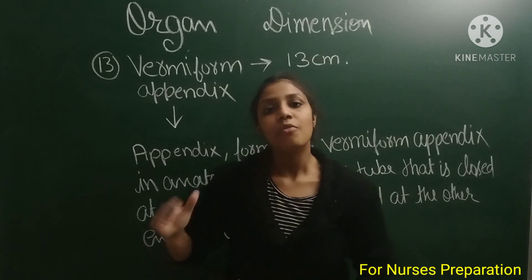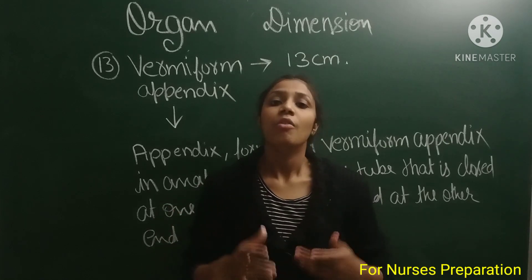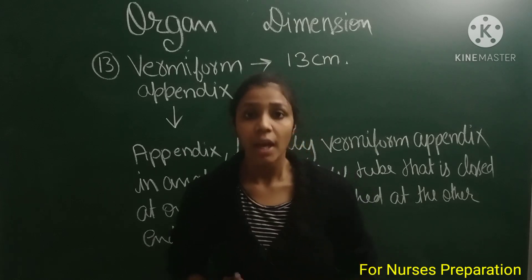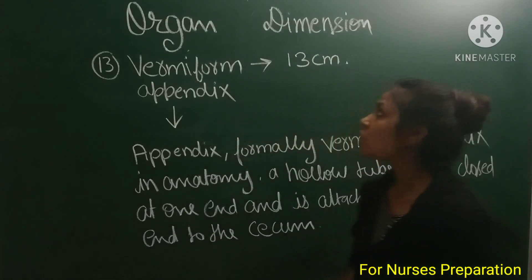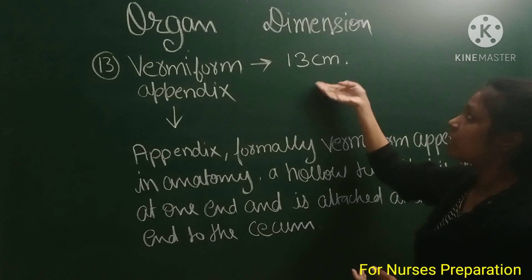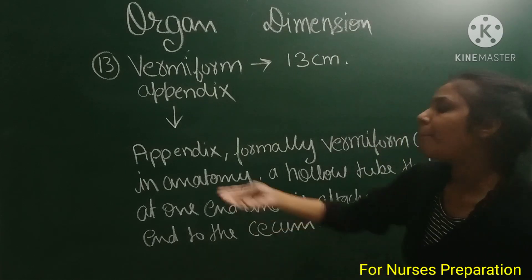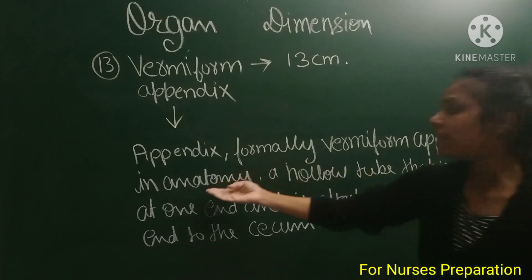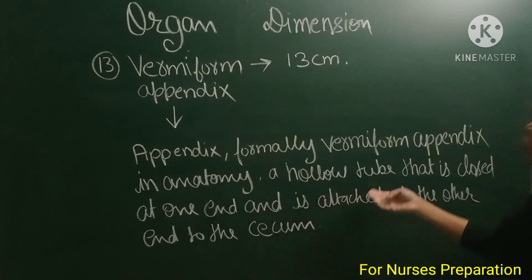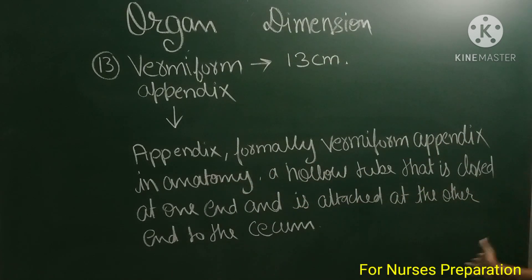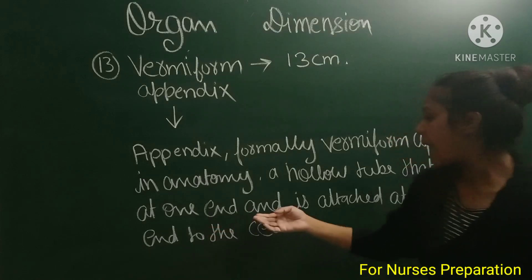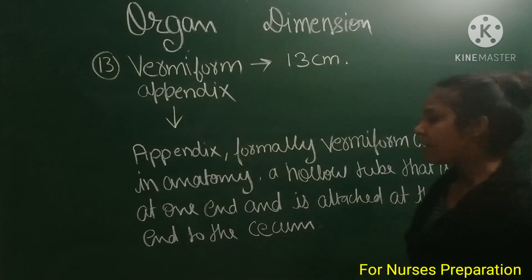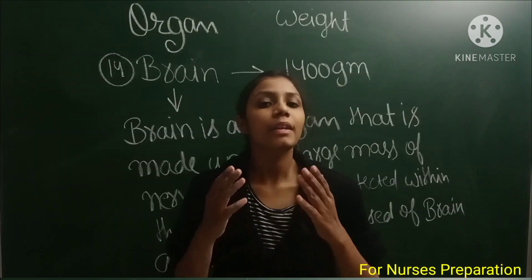Next is the vermiform appendix. The vermiform appendix is a vestigial organ, 13 centimeters in dimension. It is a hollow tube that is closed at one end and attached at the other end to the cecum of the large intestine.